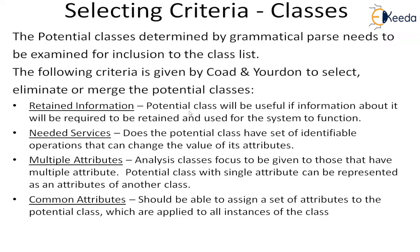What are the criteria? One is retained information — a potential class is useful only if information about it will be required to be retained and used for the system function. If it is not persistent information, we do not need to consider it as a class. Next is needed services — does the potential class have a set of identifiable operations that can change the value of its attributes? If there is such a service, we can consider it as a criterion for moving it to the selected class.